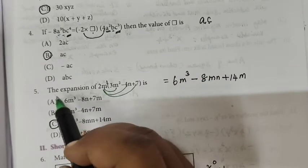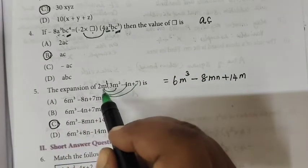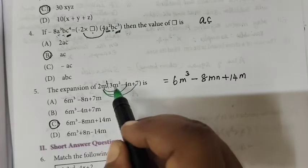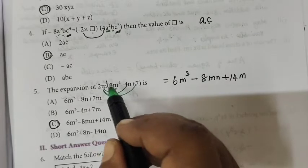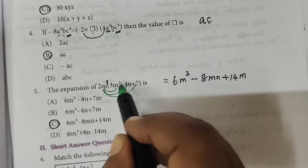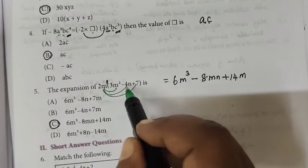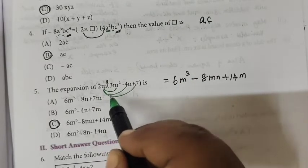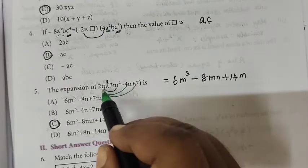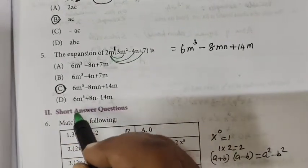Question number 5: The expansion of this one — 2m will not be separate. 3 twos are 6. You are adding the powers: 1 plus 2 is 3. Similarly, minus 8m·n. Then 7 twos are 14. So Option C is the correct one.